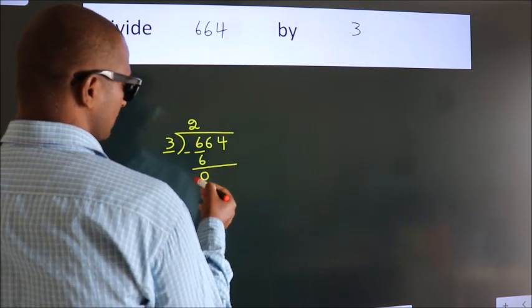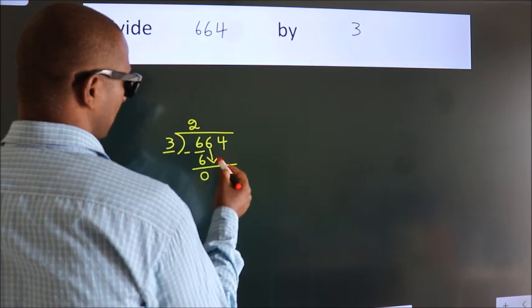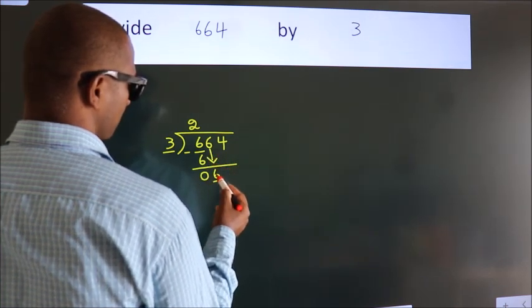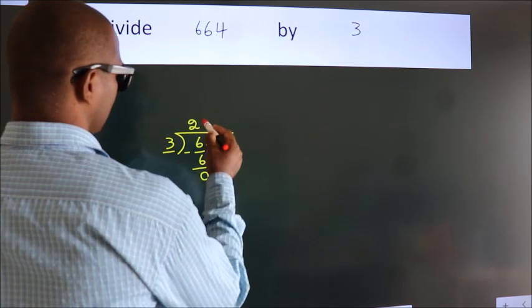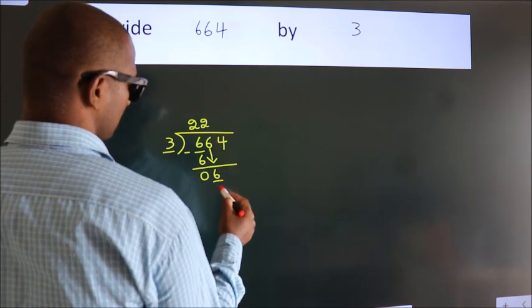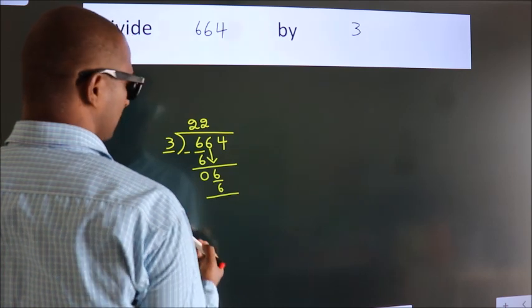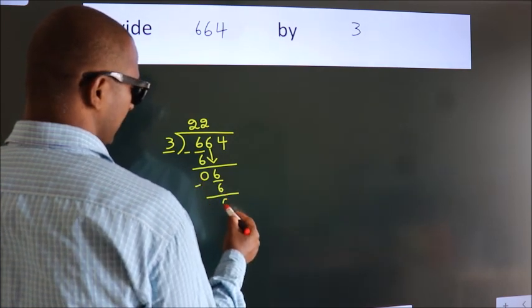After this, bring down the beside number. So, 6 down. When do we get 6? In 3 table. 3 twos, 6. Now, we subtract. We get 0.